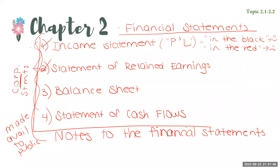We've reviewed what the four statements are that public companies are required to furnish. We said we're going to take a corporate perspective and focus on the statement of retained earnings for our second statement. What I covered so far was in topics 2.1 to 2.2, since I also gave you the definitions. Now we're going to move on to topic 2.3, which is preparing the financial statements.